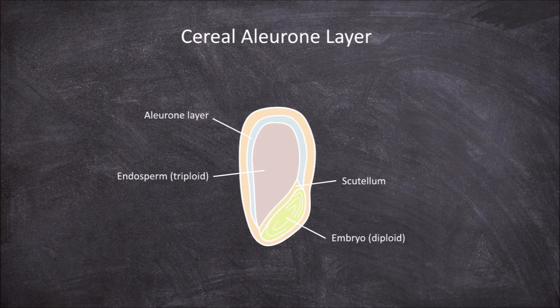The third region is the testa pericarp, which surrounds the endosperm and embryo. There are a series of events that happen during seed germination in the cereal embryo that enable the starches in the starchy endosperm to get broken down to be used by the growing embryo in the early stages of its growth.